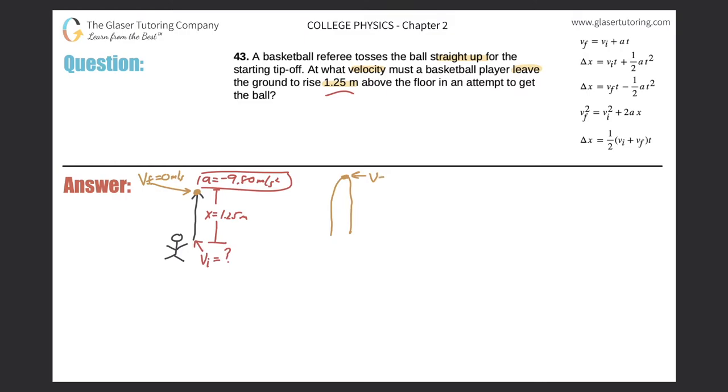This will be a final velocity if you're talking about this particular point here as the start, assuming it travels up this way and then comes back down. Or it might be an initial velocity if you're considering the path from the top to the bottom. It depends. It's all relative.